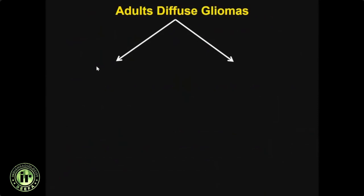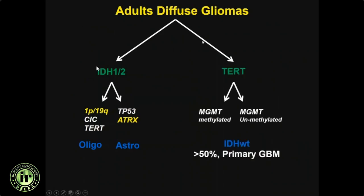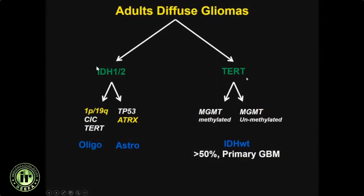Based on IDH mutation status, you can divide adult diffuse infiltrating gliomas: those with IDH mutation — majority IDH-1 or IDH-2 — then look at 1p19q codeletion, which identifies molecular oligodendrogliomas. Without 1p19q codeletion but with ATRX and TP53, these are molecular astrocytomas. More than 50% of adult diffuse gliomas don't have IDH mutation — these are IDH wild-type with TERT mutation, and the majority of these are primary GBMs.